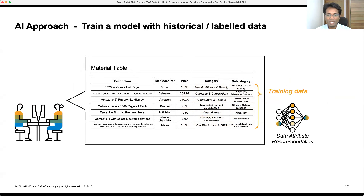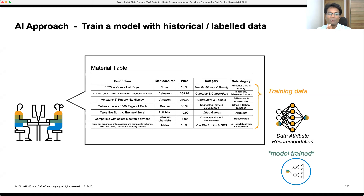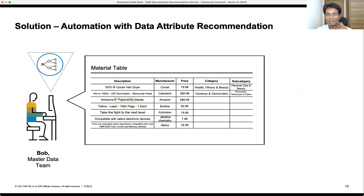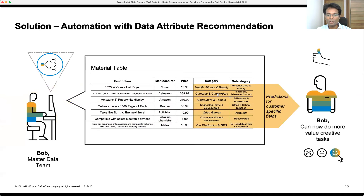This is where our service comes in. We take the existing data with categories, use it as training data, pass it to the Data Attribute Recommendation service, and train a machine learning model. Once trained, the model learns all the patterns — what kinds of descriptions and manufacturers are classified into certain categories and subcategories. Next time records come in, Bob doesn't have to manually think about what category something belongs to. The service automatically predicts these fields, eliminating time spent on manual tasks.